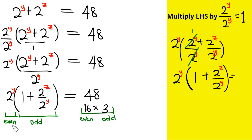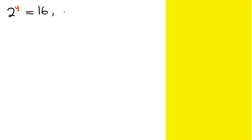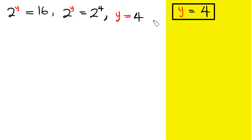Equating even to even and odd to odd: 2 raised by the power of y equals 16, and 1 plus 2^z over 2^y equals 3. Since 16 equals 2 raised by the power of 4, by the index rule y equals 4.